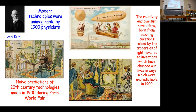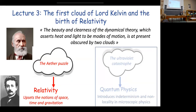Of course, the person at the center of these discoveries is Albert Einstein. I recall here a sentence of Lord Kelvin: 'The beauty and clearness of the dynamical theory which asserts heat and light to be modes of motion is at present obscured by two clouds.' One of these clouds is the puzzle of the ether, which I will talk about today — and this led to relativity, which upset the notion of space, time, and gravitation.